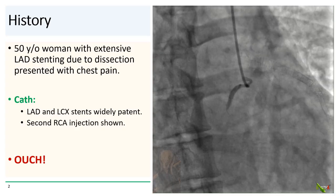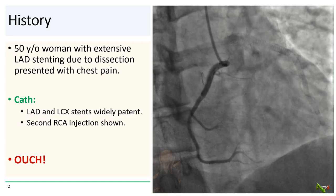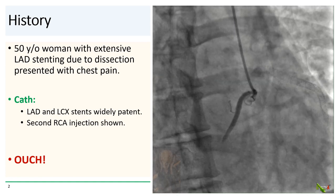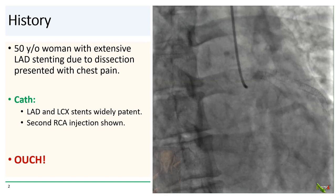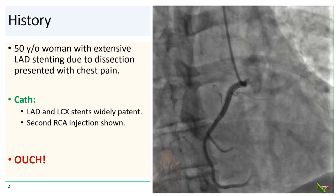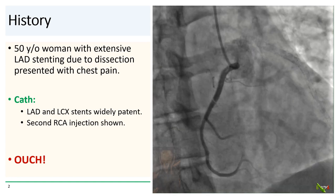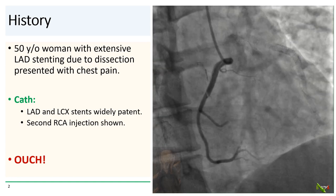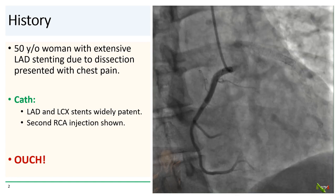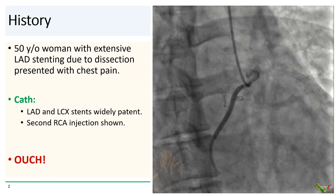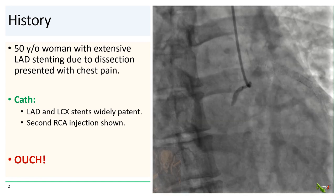We have a 50-year-old woman who presented with chest pain. Her past medical history is notable for extensive stenting of the LAD due to a dissection. On cath, her extensively stented LAD is widely patent and her circumflex stent is patent as well. The initial LAO injection of the RCA showed only mild to moderate osteal disease.